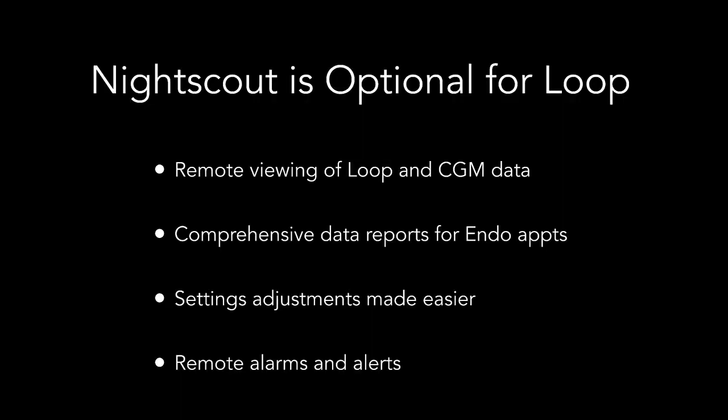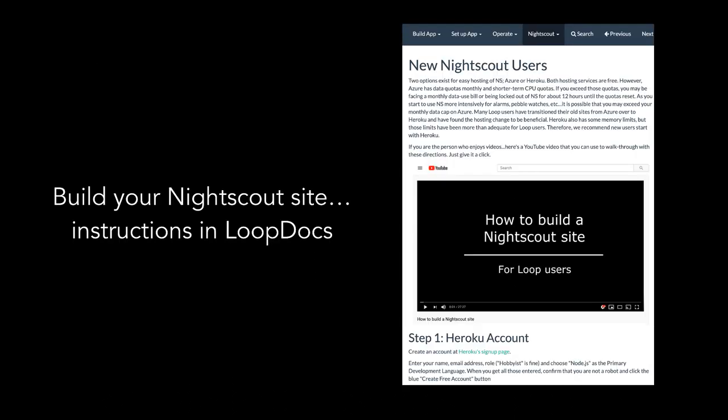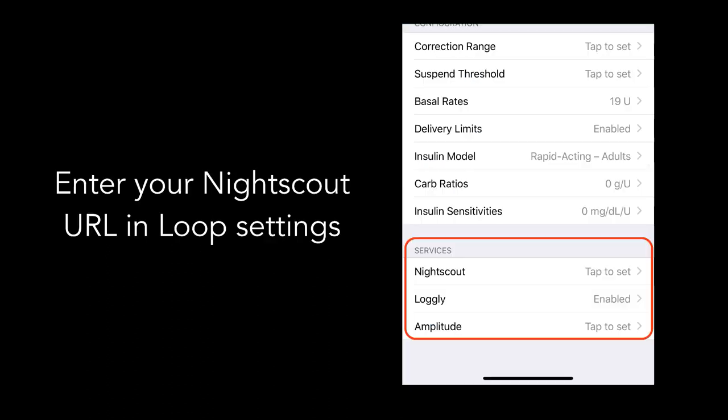Nightscout is an optional service for Loop users. In other words, you don't have to have a Nightscout to Loop, but Loop does work really well with Nightscout and it provides a lot of benefit. Parents and caregivers can remotely see Loop's data overlaid on CGM trends. A Nightscout site allows for comprehensive data reports to bring to your endocrinology appointments, making settings adjustments easier for you and your health care provider. Nightscout can also provide customized alarms and alerts beyond just the simple Dexcom alarms. There are easy-to-follow directions and a video for how to build your Nightscout site in Loop Docs, so don't be intimidated — I promise you, you can do this. After building your Nightscout site, you can integrate Loop by entering the Nightscout URL to your Loop settings. It's easy peasy. Now your Loop data will be streaming up into the internet and available for you remotely.